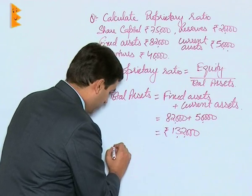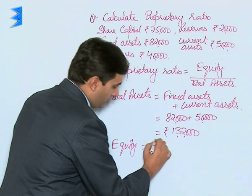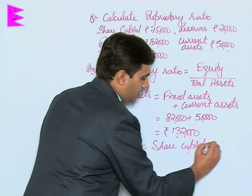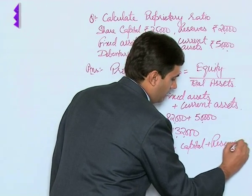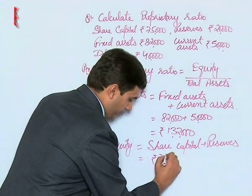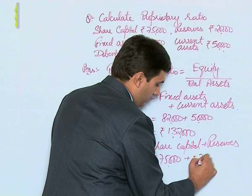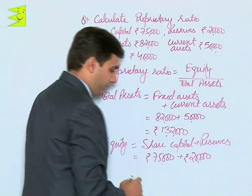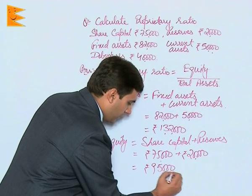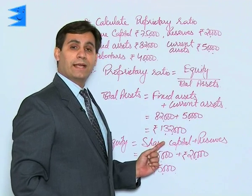Now let us calculate the other component, that is equity. Equity is equal to share capital plus reserves. Share capital is rupees seventy-five thousand and reserves is rupees twenty thousand, so equity would be equal to rupees ninety-five thousand.